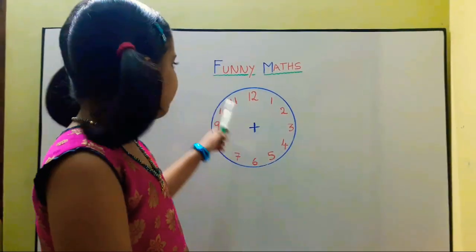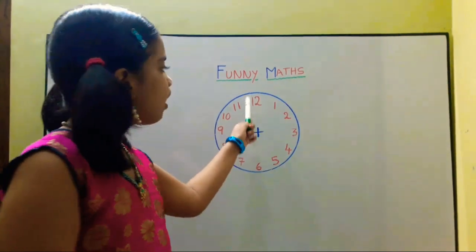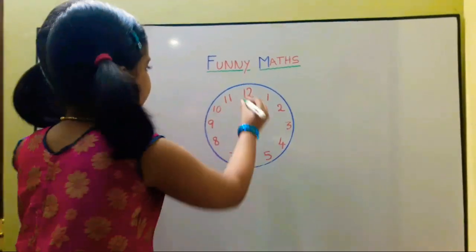In this circle we add some numbers. It will come 12. First we circle 12.